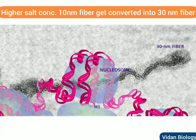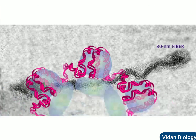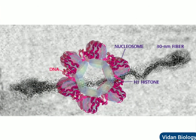At higher salt concentrations, the 10 nanometer fiber is further compacted into a 30 nanometer fiber. The DNA helix is already twisted, and adding further twists to make these nucleosome and solenoid structures means the DNA is supercoiled. H1 plays a role as linker DNA.